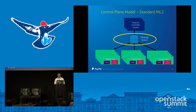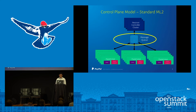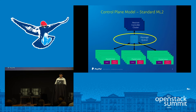The next issue I'm going to talk about is on the control plane. I take a very typical standard ML2 deployment diagram. We have a Neutron control cluster, and we have a lot of hypervisors that talk to Neutron controllers through the message queue. I highlighted the message queue with a yellow box — that's the focus we want to concentrate on.